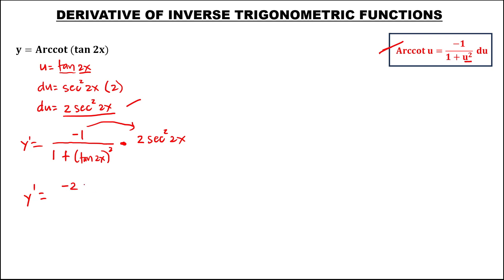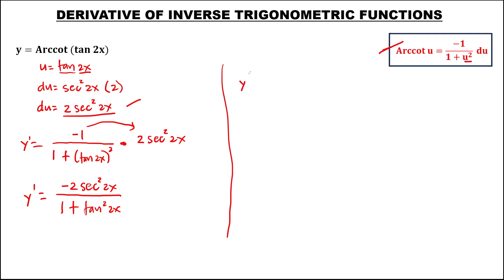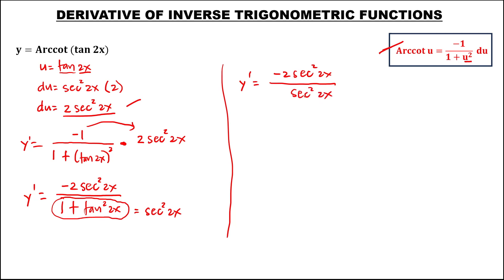Then to simplify by multiplying: this is negative 2 secant squared 2x, over 1 plus tangent squared 2x. We can use the trigonometric identity because 1 plus tangent squared 2x equals secant squared 2x. So we have negative 2 secant squared 2x over secant squared 2x — cancel — therefore y prime is equal to negative 2.